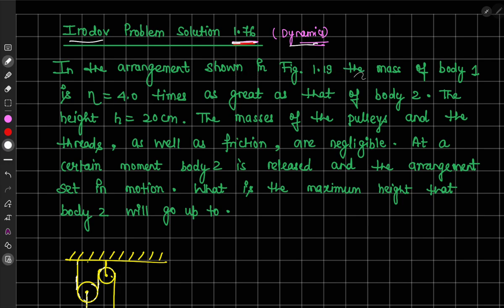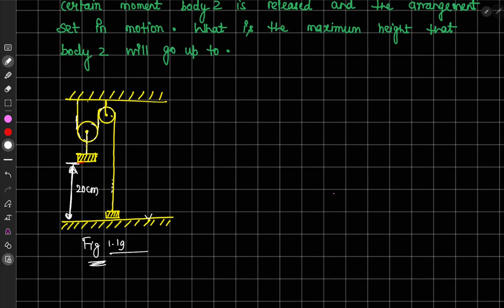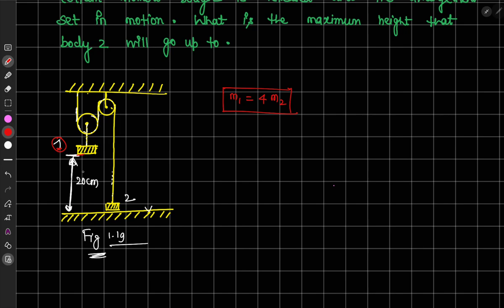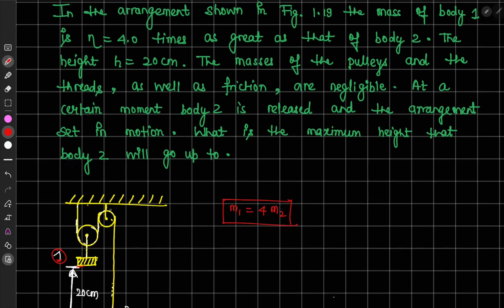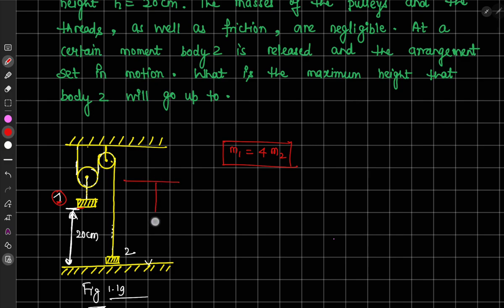In the arrangement shown in figure 1.19, the mass of body 1 is eta times as great as that of body 2. Body 1 has mass m1 equal to 4 times mass of body 2. The height h is equal to 20 cm, so body 1 is kept at 20 cm from the ground. The masses of the pulleys and threads are negligible and there is no friction between the pulleys and the thread. We are asked: what is the maximum height that body 2 will rise to when released?